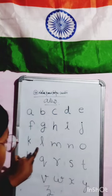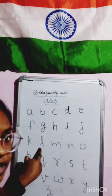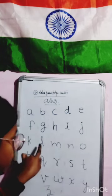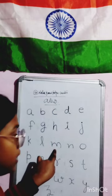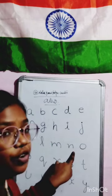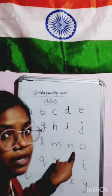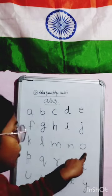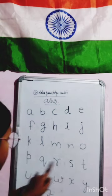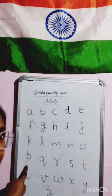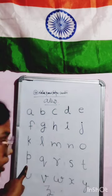K for Kite, Kite means Patang. L for Lion, Lion means Sher. M for Monkey, Monkey means Bandar. N for Nest, Nest means Ghosla. O for Orange, Orange means Santra. P for Parrot, Parrot means Tota.